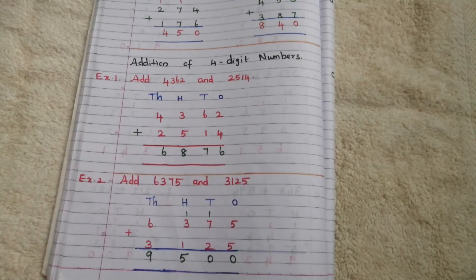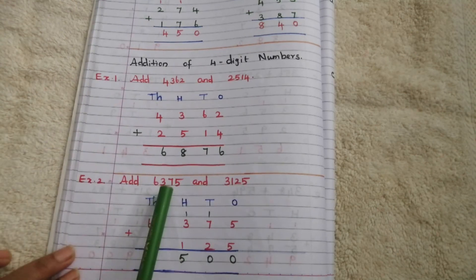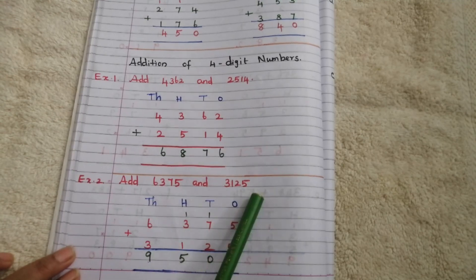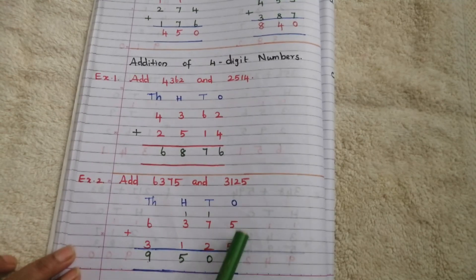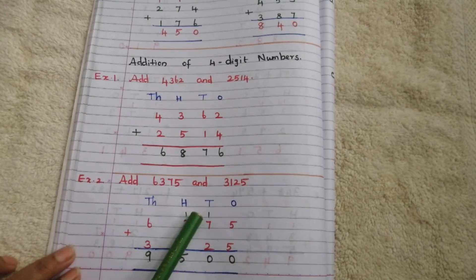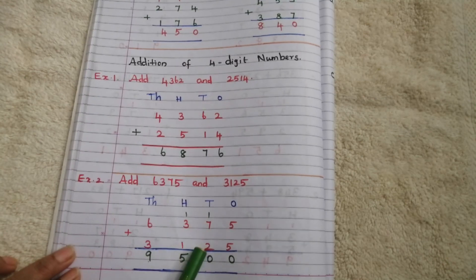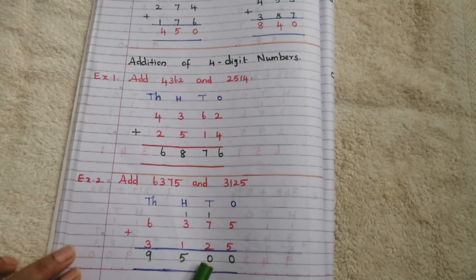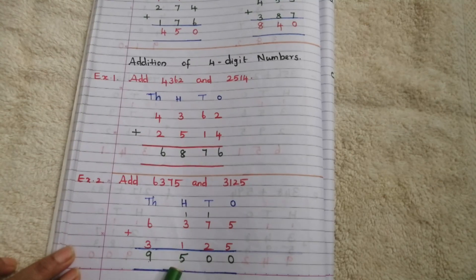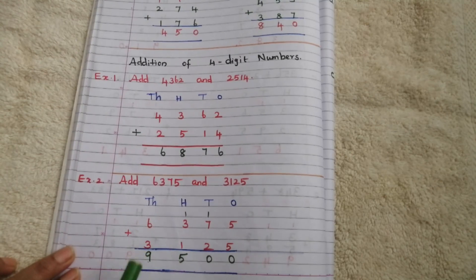Second problem: add 6,375 and 3,125. If we add 5 plus 5, we get 10. Put 0 here and carry 1. Then 7 plus 1 is 8, 8 plus 2 is 10 — put 0 here and carry 1. So 3 plus 1 is 4, 4 plus 1 is 5, and 6 plus 3 is 9.